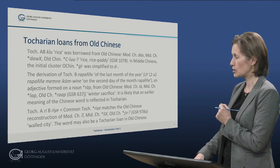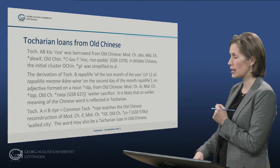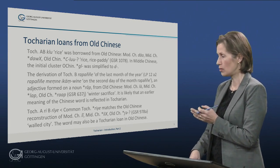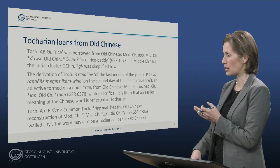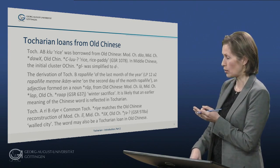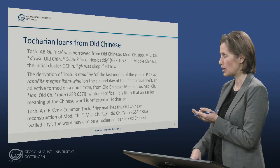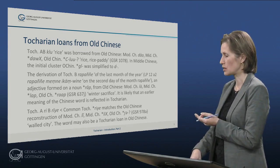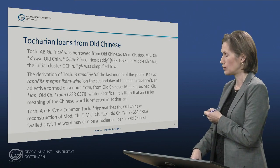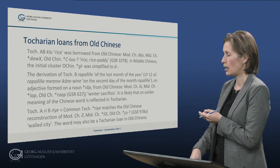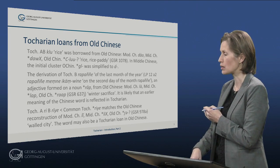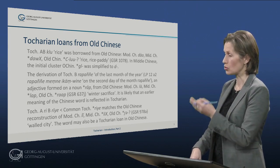Another interesting word is the Tocharian word for town: Tocharian A 'ri', Tocharian B 'rie'. It matches Old Chinese 'li', modern Chinese 'li', Old Chinese something like 'r', meaning a walled city. It is likely that the Tocharians borrowed the word from the Chinese, who built towns and fortifications, as the Tocharians came migrating from Ukraine all the way to Eastern Central Asia. However, it is also possible that the word was borrowed the other way around, and we cannot tell from the phonology which direction the borrowing went.